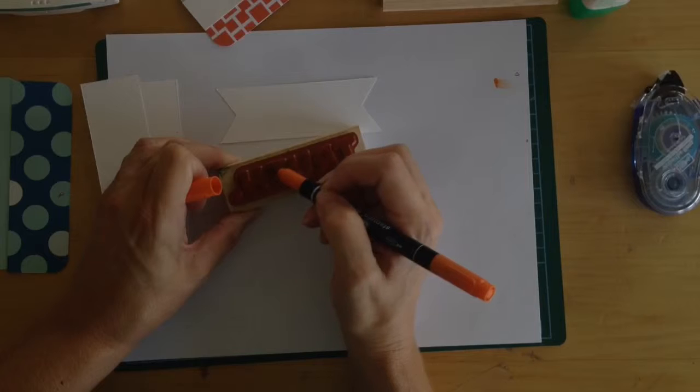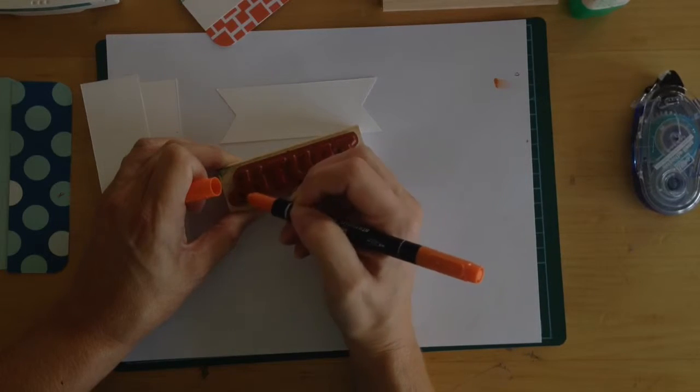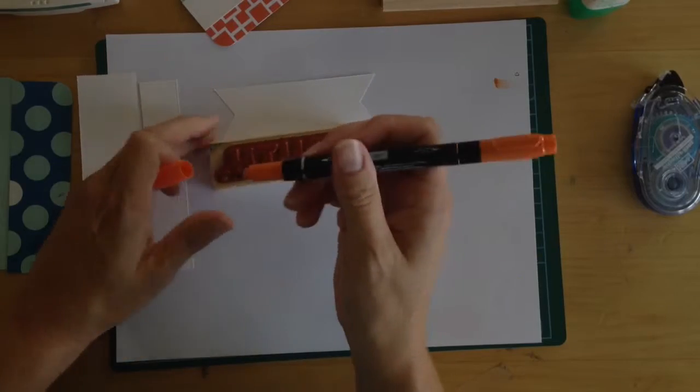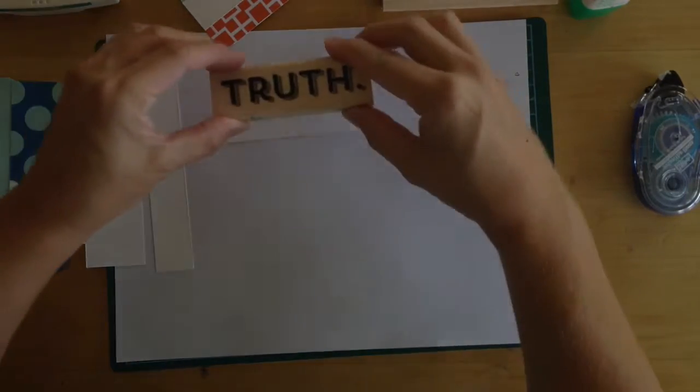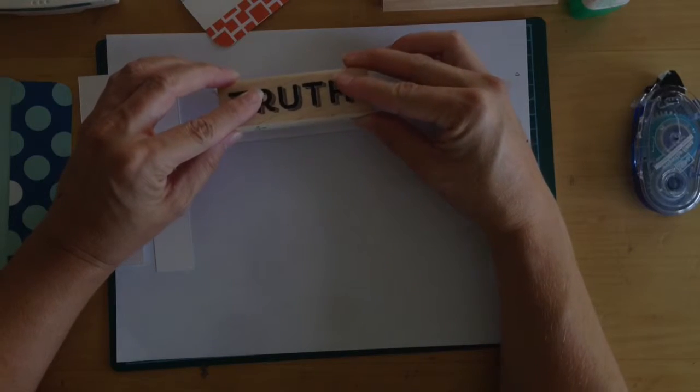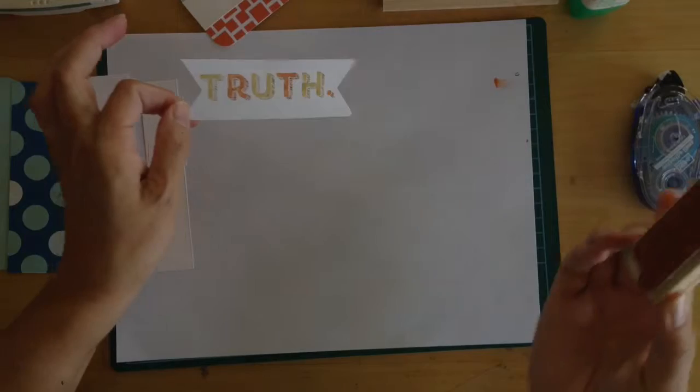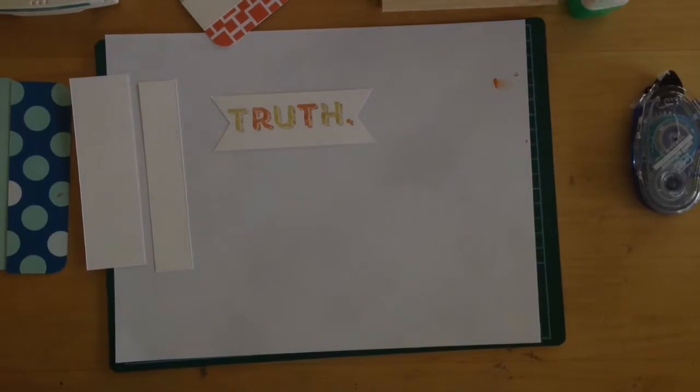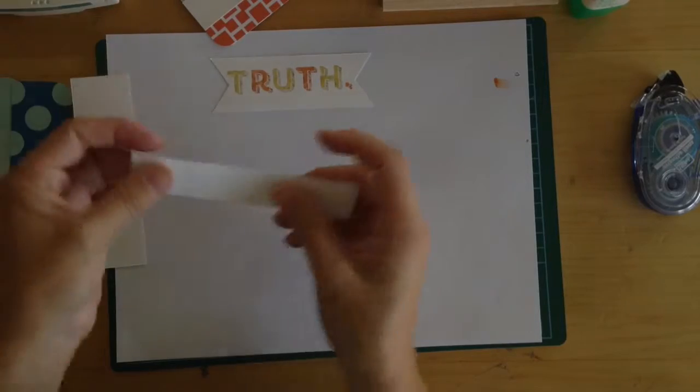And you could do this kind of an assembly line. Line up your strips, cut them out, and stamp truth and remember on each. So I'm going to go ahead and take that and stamp that right on the cardstock there. So that turned out kind of fun. So there's the truth part of it.